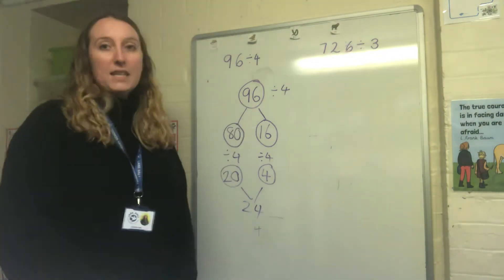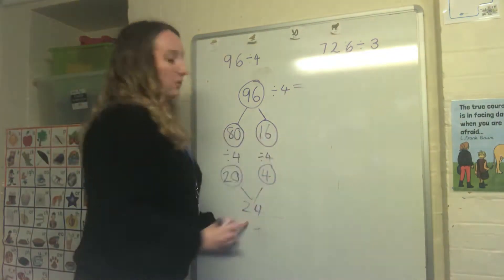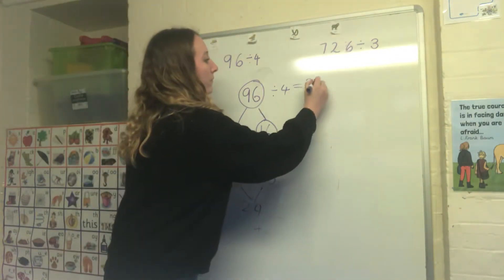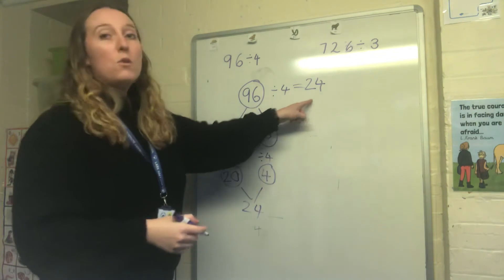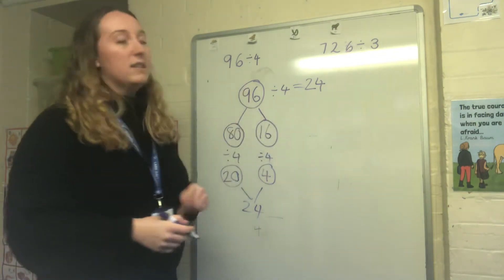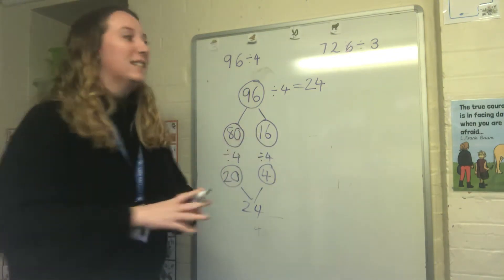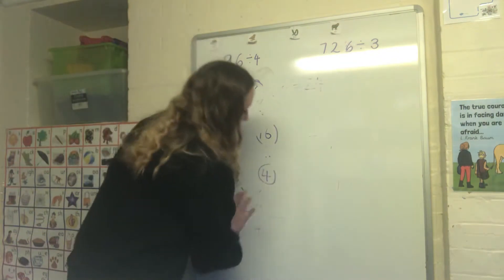So that tells me that 96 divided by 4 is 24. You could always use the inverse to check your answer so you could do 24 multiplied by 4 and if you get 96 as your answer then you're correct. Let's have a look at another example.